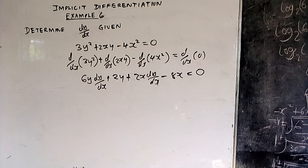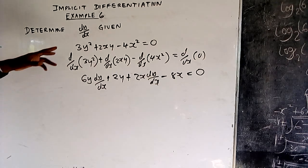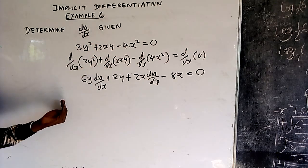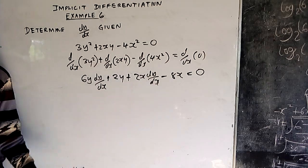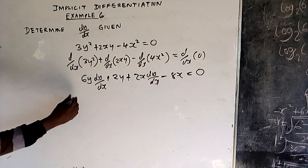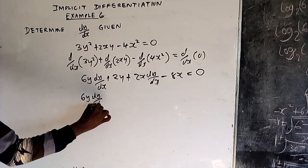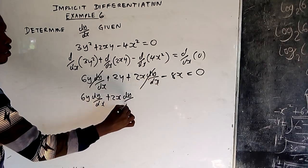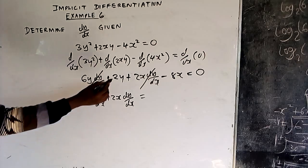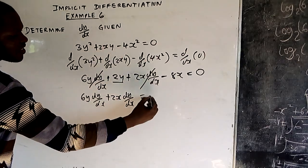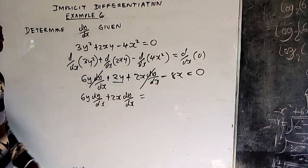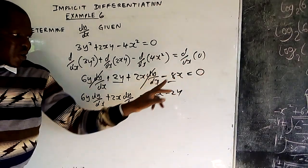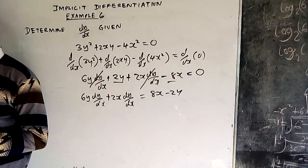Having done that, the next step is just to simplify. What do they want you to get? dy/dx. So terms with dy/dx stay on the left side of the equation, and terms without dy/dx go to the right-hand side. So here we have 6y dy/dx plus 2x dy/dx on the left. The term 2y goes to the other side and becomes negative 2y, and negative 8x goes to the other side and becomes positive 8x.